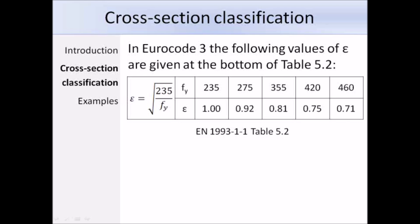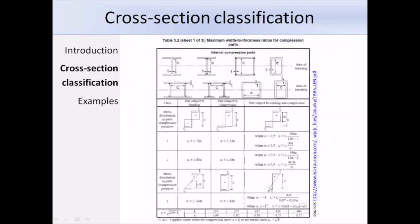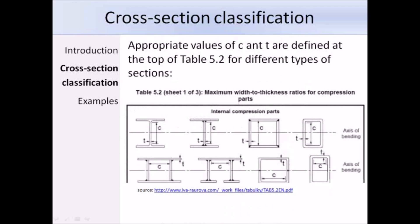Table 5.2 is made up of three sheets. Sheet 1 is for internal compression parts; each compressed element is compared to the limiting width-to-thickness ratios for classes 1, 2, and 3. An element that fails to meet class 3 limits should be taken as class 4. The c/t ratios use dimensions shown at the top of the table. The compression width c is defined as the flat portion of the cross-section, excluding root radii and welds — this differs from BS 5950.